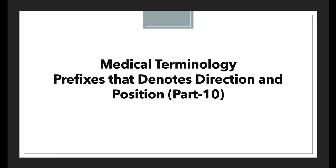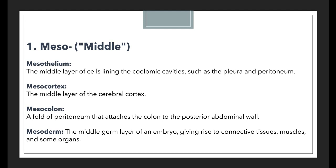The first prefix we have today is 'meso.' The meso prefix is mainly used to indicate something as the middle. Whenever you want to convey the idea of the middle of something, you will use meso. To help identify how it works, here are a few examples. The first example is mesothelium, which means the middle layer of cells lining the coelomic cavities.